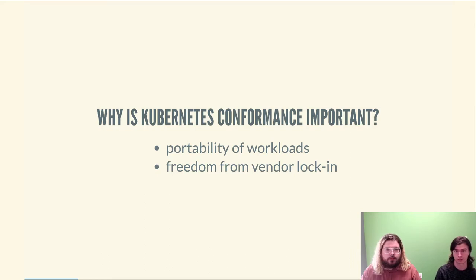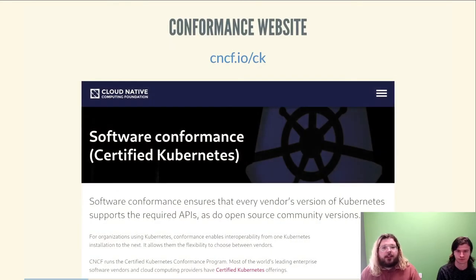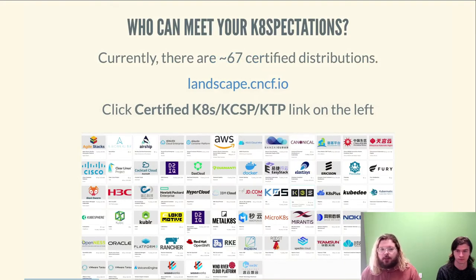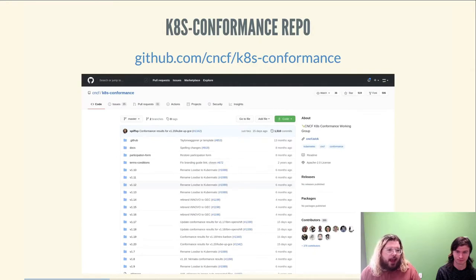Conformance also allows consistency across providers — I expect my workloads to run the same regardless of whichever vendor or wherever it is. There's good background and rationale for conformance at cncf.io. Right now there are about 67 certified distributions; the full list is at landscape.cncf.io. These vendors are certified through a transparent and open process on the Cates conformance repo on GitHub, which we will cover shortly.